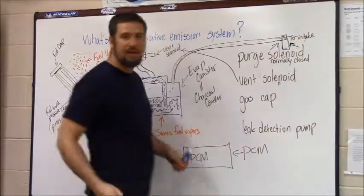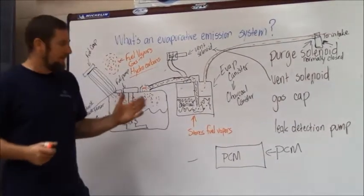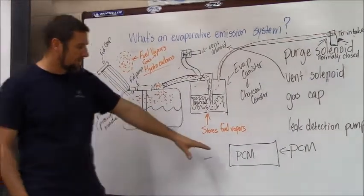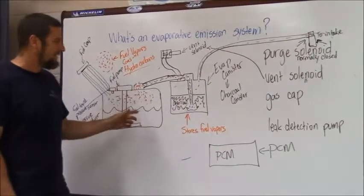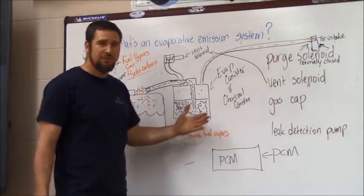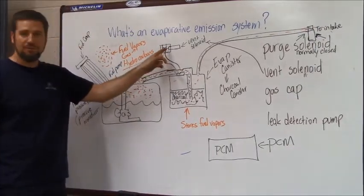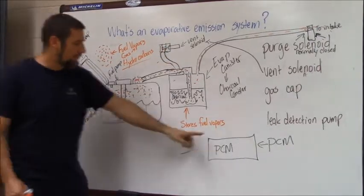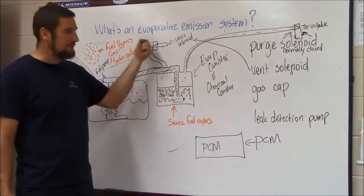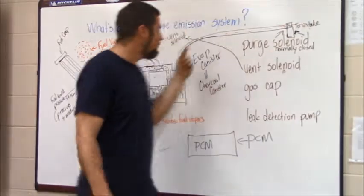Now, why does the check engine light come on? This is a bit more complicated. The federal government has told auto manufacturers that they need to monitor this system and check it for leaks. When the car decides to do a leak check, it closes the normally open vent solenoid — the PCM provides power and ground to close it — and it opens the normally closed purge solenoid so engine vacuum begins pulling a vacuum on the evaporative system.